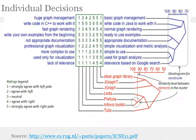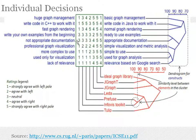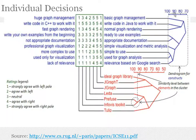Here is an example from a paper we published last year. Here is a Repertory Grid on an architectural decision — a choice of a graph library. This person had the following concerns: huge graph management, whether the library needed code written in C++ or Java, performance, writing your own examples, and so on. The alternatives that were considered were these, and then they were rated — one being strongly agree with the left pole. This is the legend for this, and by analyzing this grid, these dendrograms are obtained.